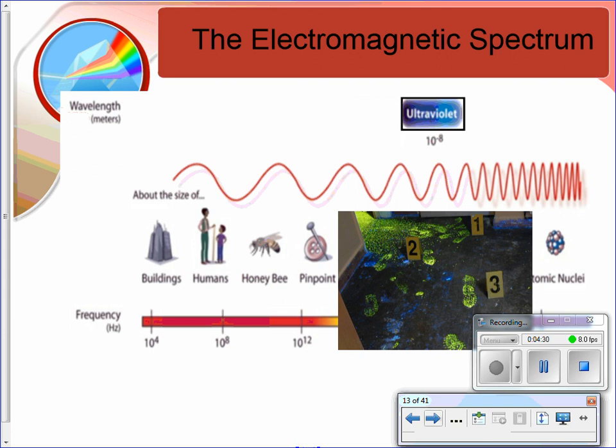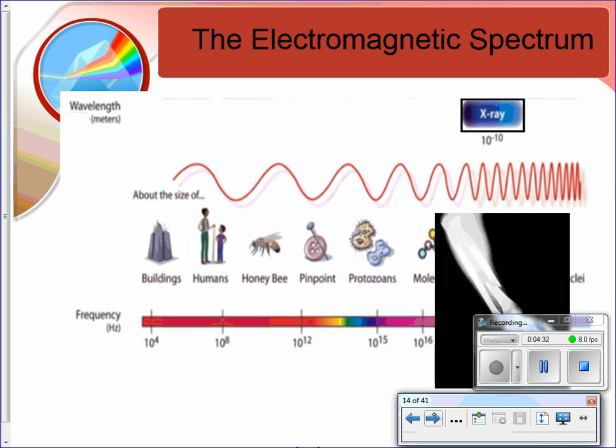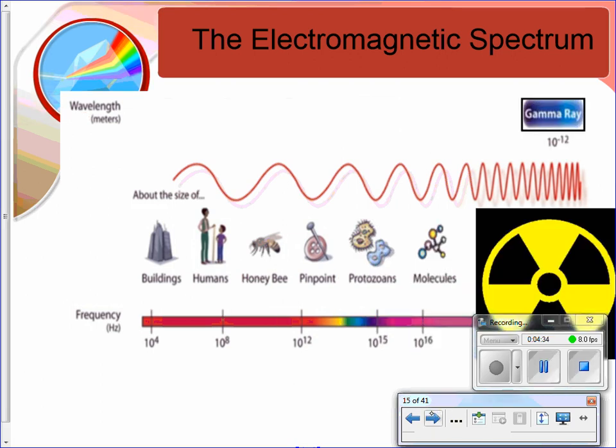Then we have ultraviolet light, or UV. Then we have x-rays. And finally, gamma rays, which are the most dangerous. We're going to talk about this in a minute. Because they have such a high frequency and a very small wavelength, they are going to have the most energy.